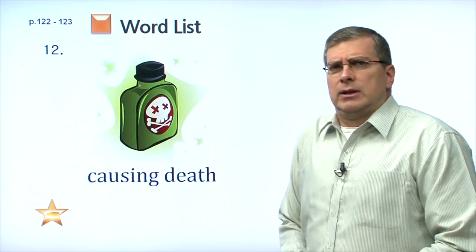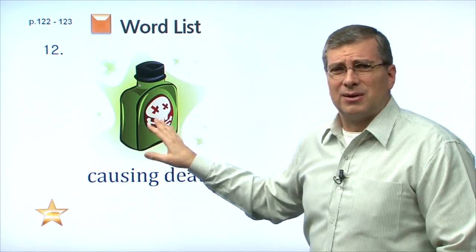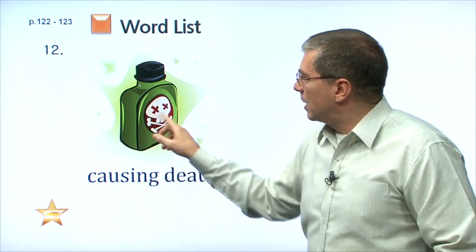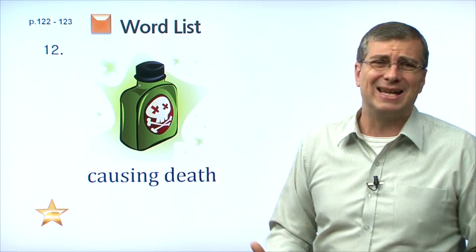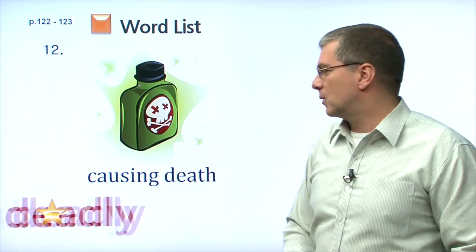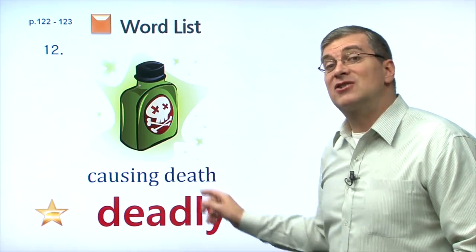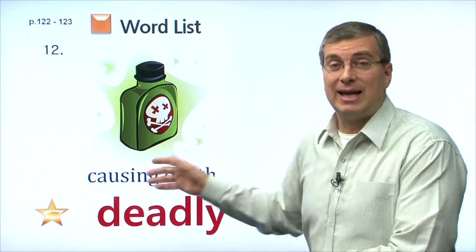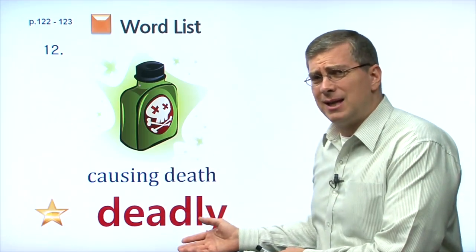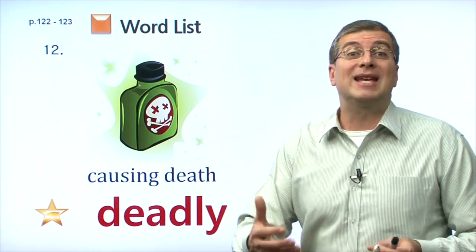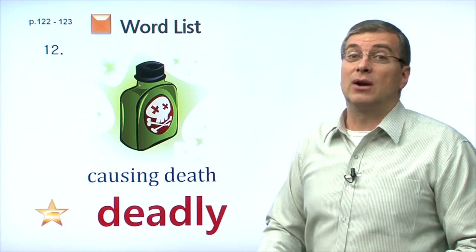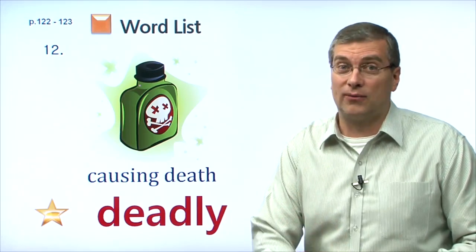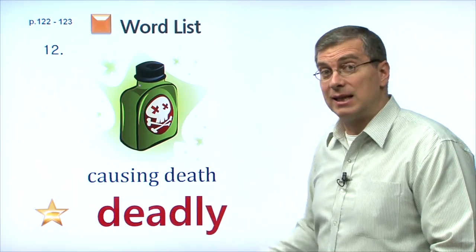Our last vocabulary word here is kind of a scary word. Be careful of this sign. If you see that sign on a bottle, stay away from that bottle. What can we say about this? It's causing death. It's very dangerous. What word are we looking at? We are looking at deadly. Deadly is a description word — an adjective. It describes something. Be careful, it's deadly — it can cause death. Why are we looking at deadly in our topic about electricity? Because electricity can be deadly. It can be very dangerous. Although electricity is very useful, you also have to be careful. Electricity can be dangerous. It can be deadly.